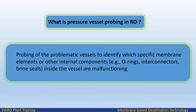What is pressure vessel probing in RO? Probing of the problematic vessels identifies which specific membrane elements or other internal components — such as O-rings, interconnectors, and brine seals — inside the vessel are malfunctioning.